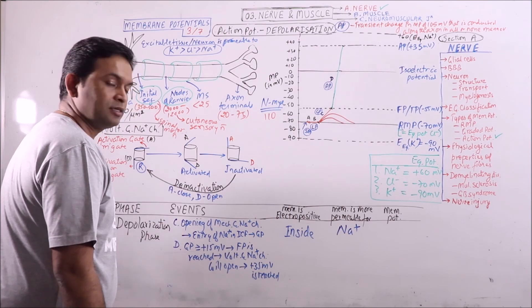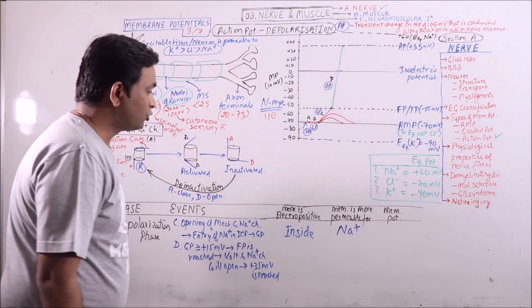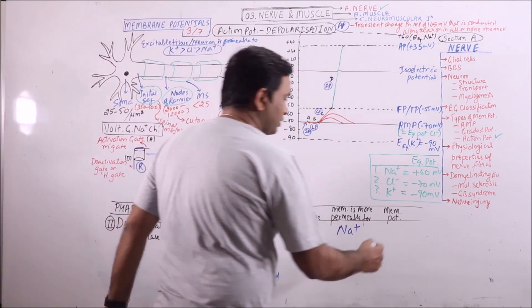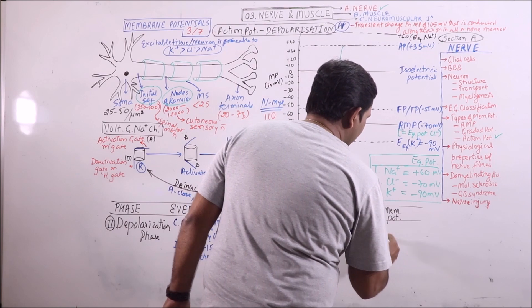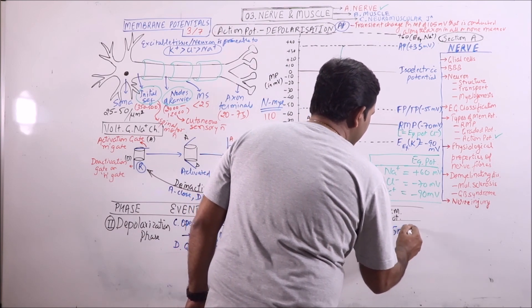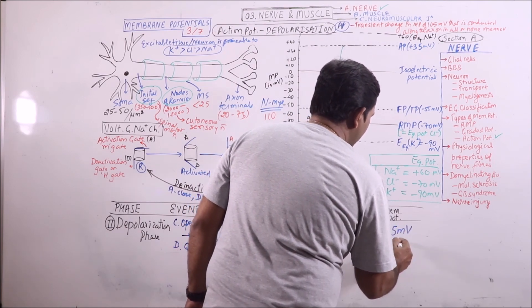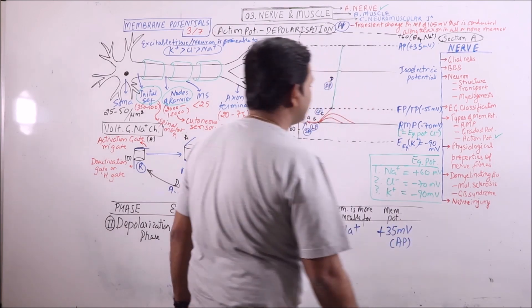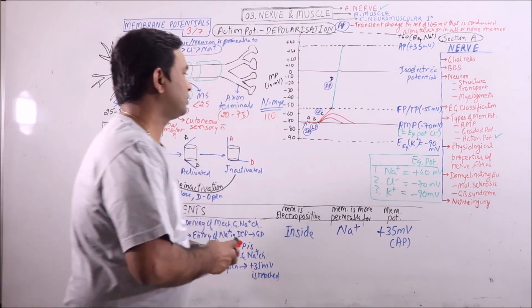That is why the membrane will become electropositive inside. The membrane is more permeable to sodium in this phase, because in both C and D phases, sodium channels are opening. The membrane potential has finally reached plus 35 millivolts, which is known as the action potential.